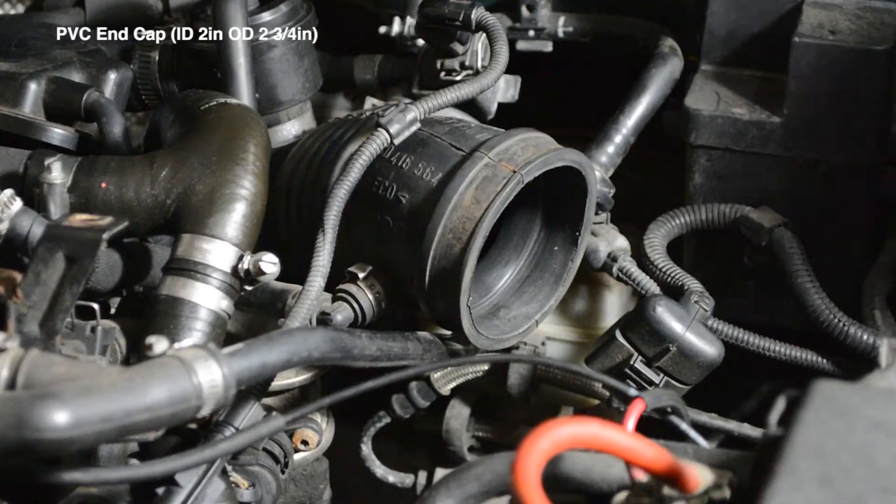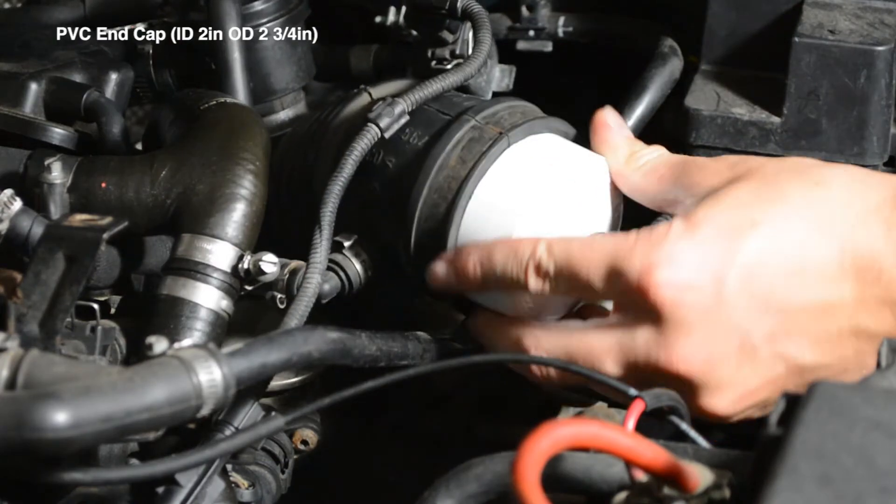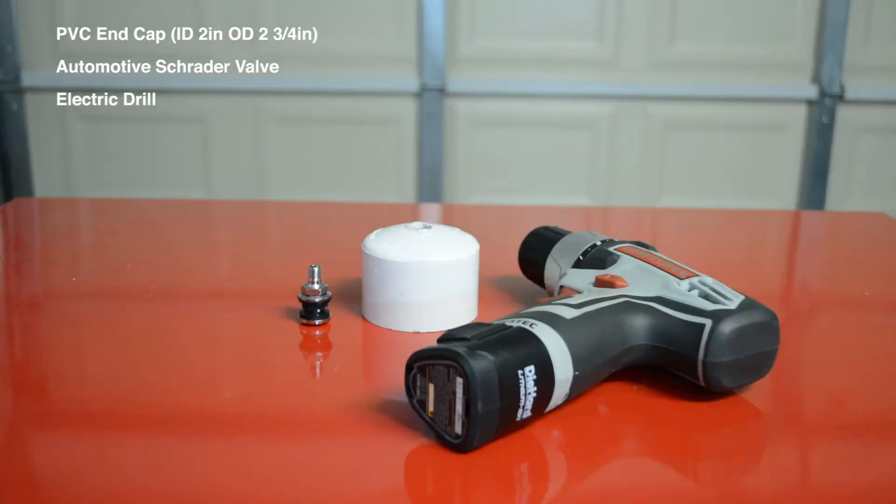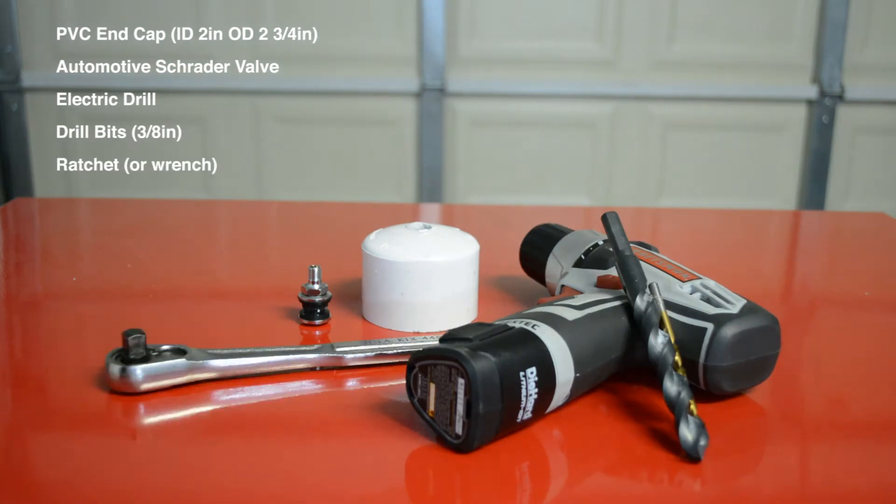First, let's start out with what you'll need. Please keep in mind that the size of everything pertains to use on a Jetta 1.8T. The PVC end cap will be attached to the intake, so the outside diameter of the PVC has to match the inside diameter of your intake. A Schrader valve, an electric drill, drill bits, a ratchet, and a 14mm socket.